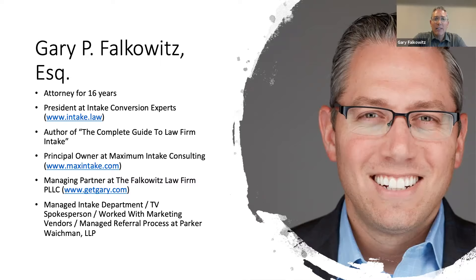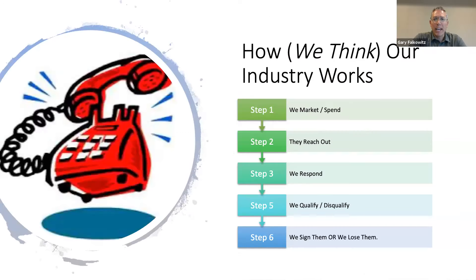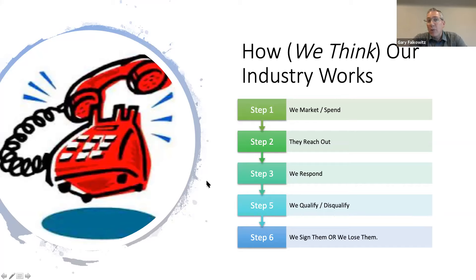This is how we think the industry works — we think it's simple. A lot of us turn a blind eye to what's really going on. We spend money, claimants reach out, we respond, we decide whether we want the case or not, and then we either sign them or we lose them. But there's a lot going on between step one and step six that I'd like to talk about.